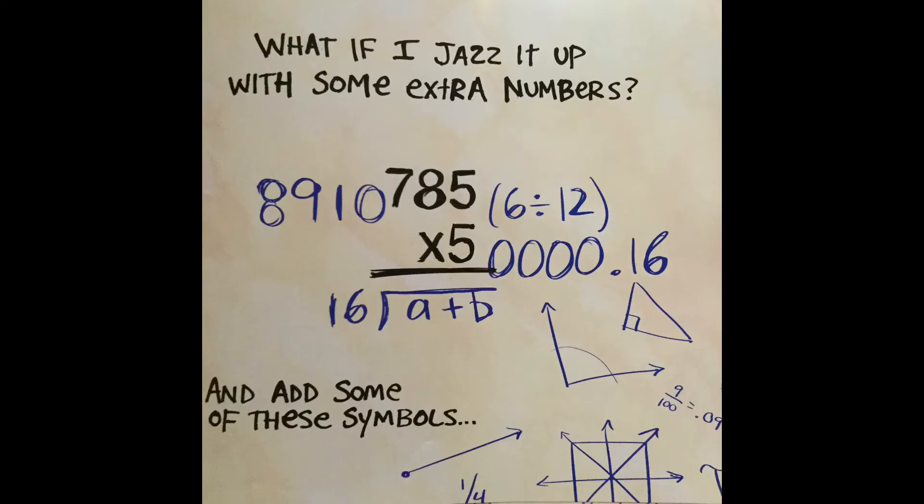What if I jazz it up with some extra numbers? Let's see. Maybe to the left, I'll put 8,910. And then to the right, 6 divided by 12. And then 0000.16. And add some of these symbols like right angle and symbol for pi. Oh, I have an idea. I can also draw a line with an arrow at the end, which is called a ray. And, whatever. Oops.